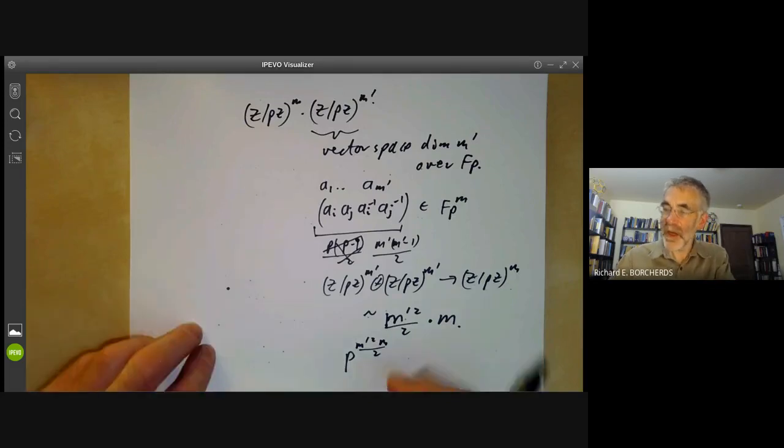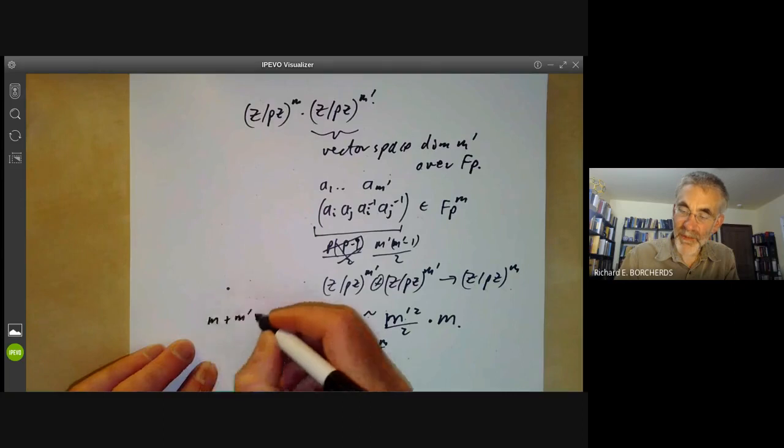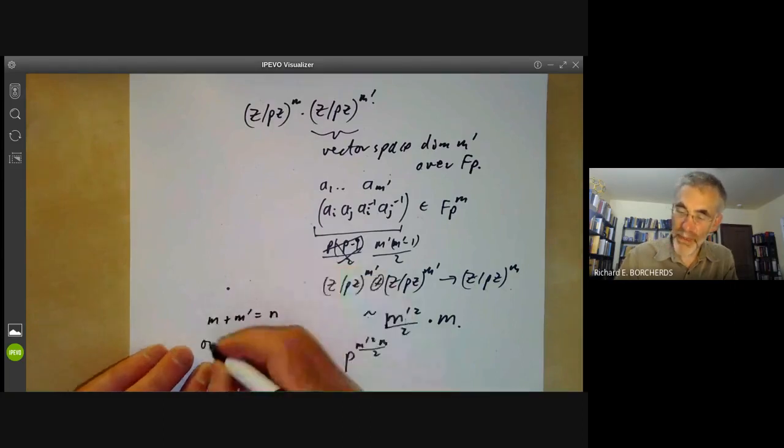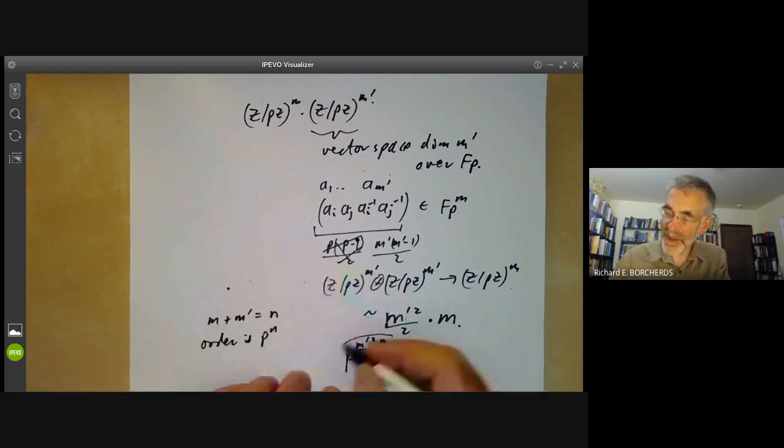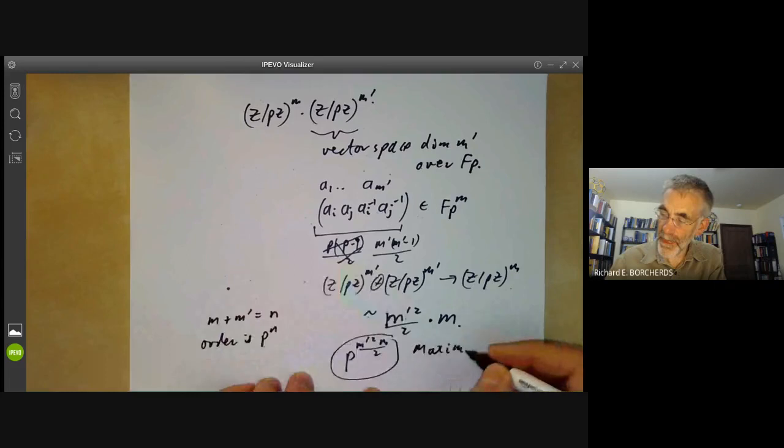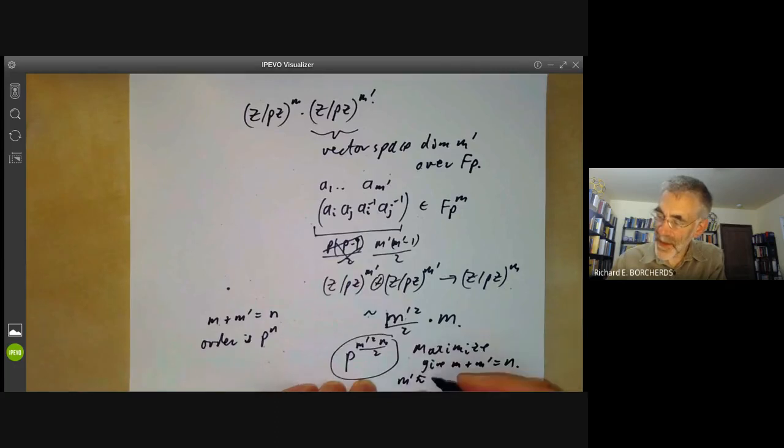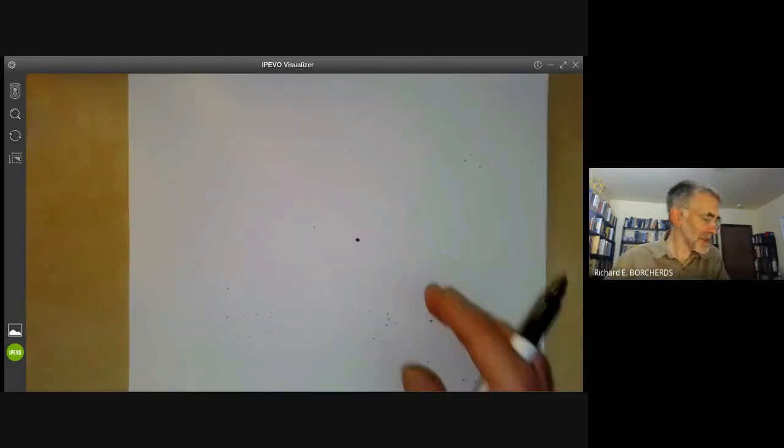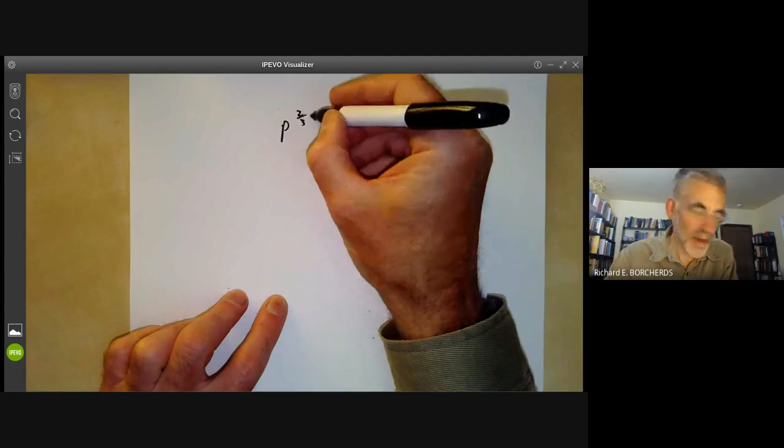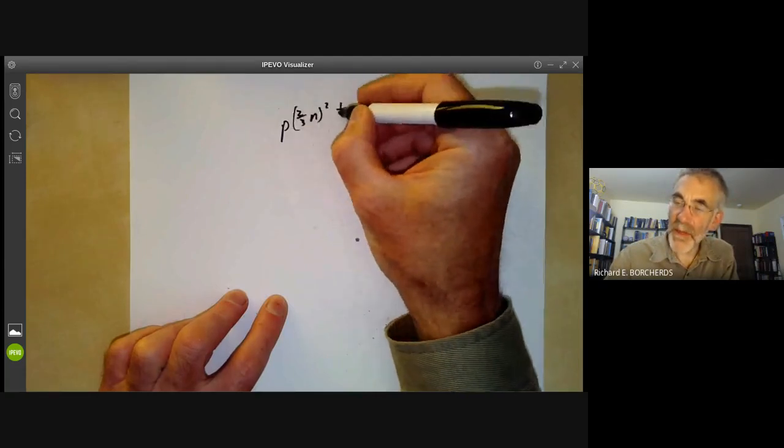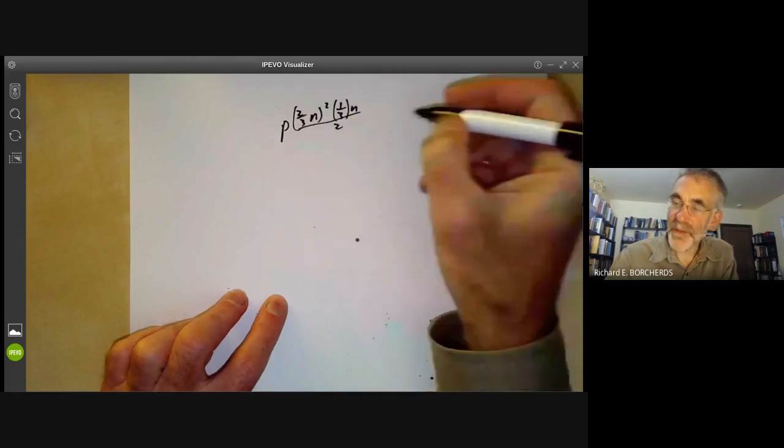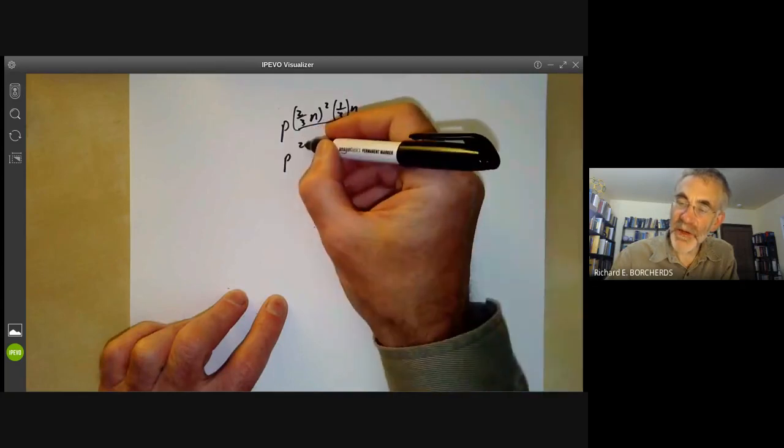Now we have m plus m prime equals n, where the order of the group is p to the n. So we want to maximize this given that m plus m prime equals n. That's an easy calculus problem. We find it's given by m prime is about two-thirds n and m is about a third of n. So all together we seem to be getting about p to the two-thirds n squared times a third of n over 2 different groups, which is about p to the 2 over 27 n cubed.